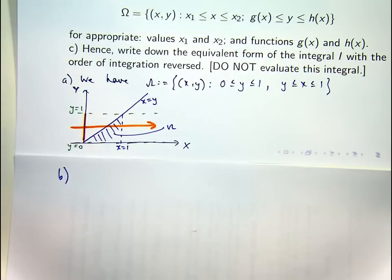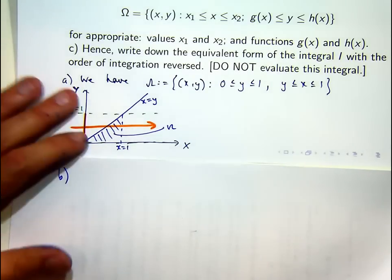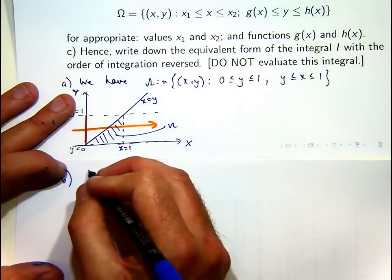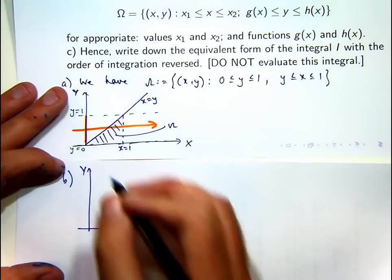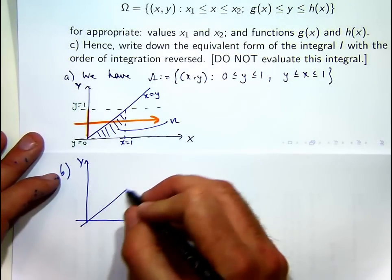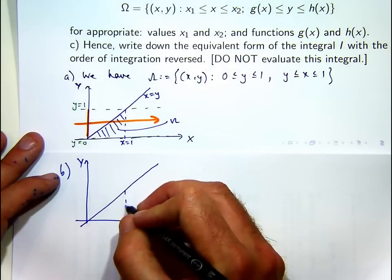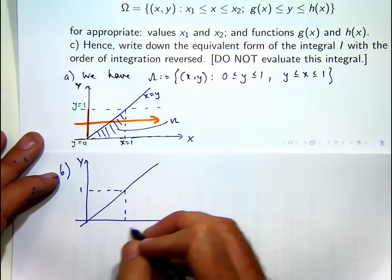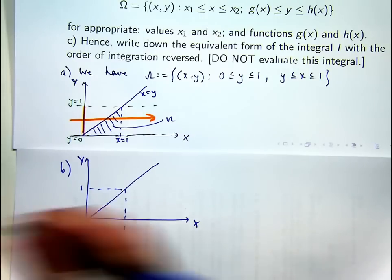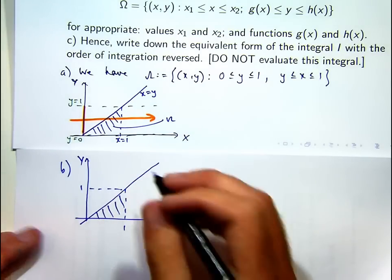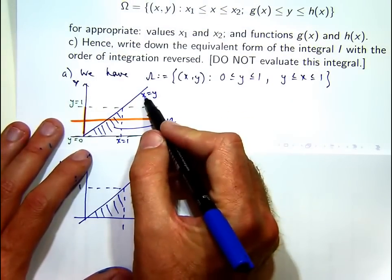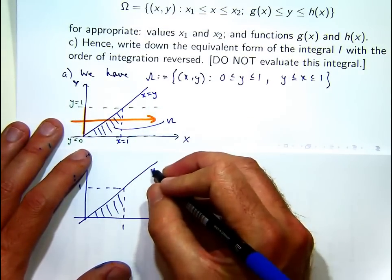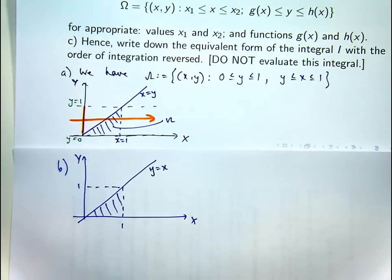So I'm actually going to draw a new curve. You don't necessarily have to do this. And essentially, you draw the same curve, but you invert. So instead of having x as a function of y here, you write y as a function of x. Now, because it's the simplest function, y equals x, you just actually just swap it around.